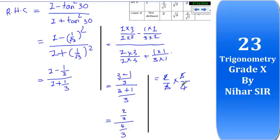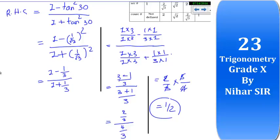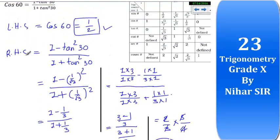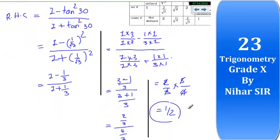3 and 3 cancel, 2 divided by 4, so that's 1 upon 2. Because 2 is in denominator and numerator has nothing, so it's 1. So this is also 1 upon 2 and this is also 1 upon 2, so this sum is solved.